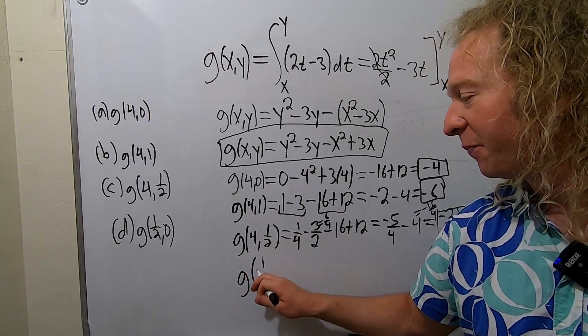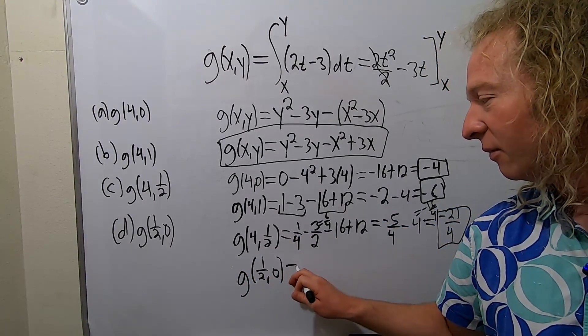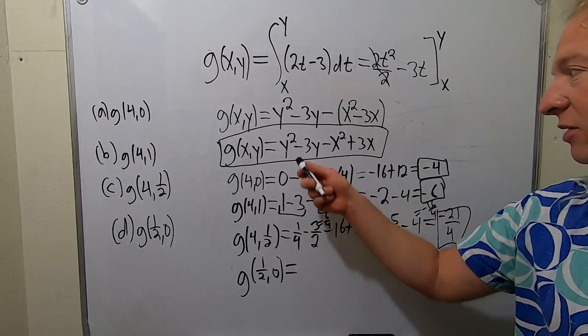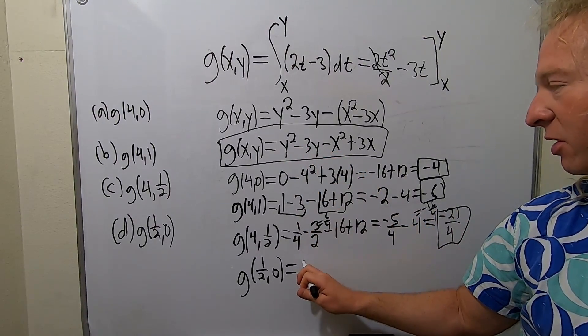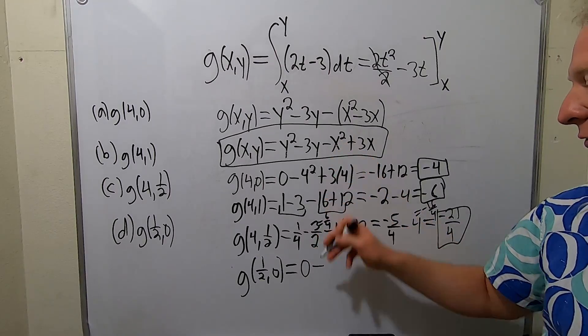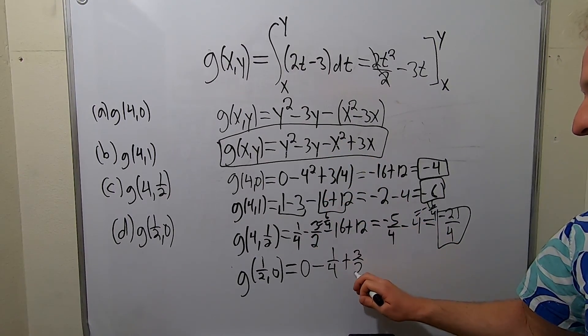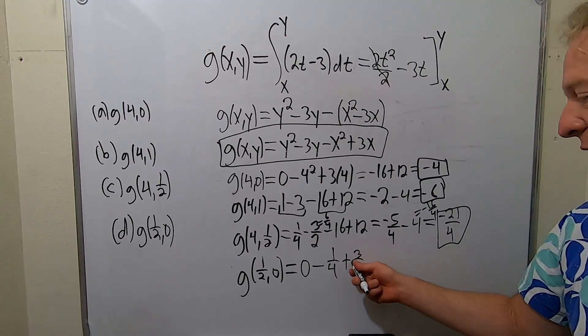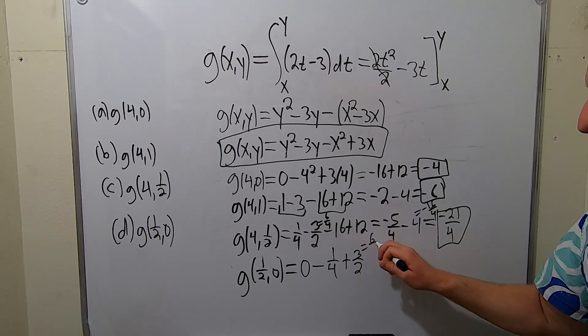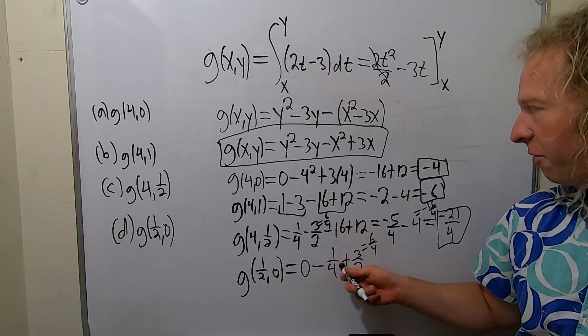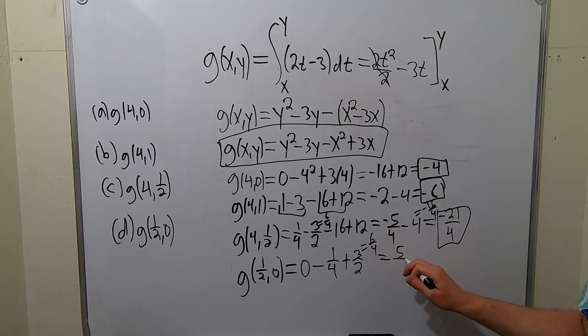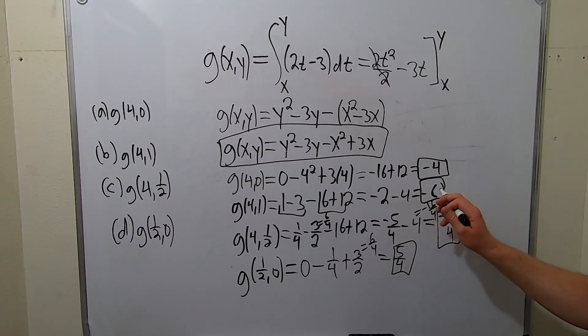g of 1 half comma 0. The y's are 0, that's always a good thing. So 0 minus 0 is 0. You get 0 minus 1 fourth plus 3 halves. Think of it as 6 fourths. Negative 1 fourth plus 6 fourths is equal to 5 fourths. And that is the final answer.